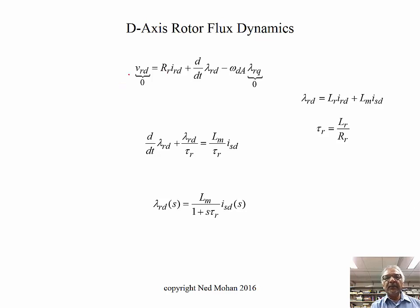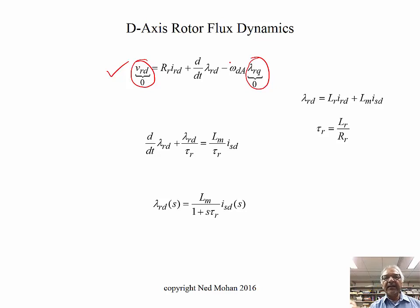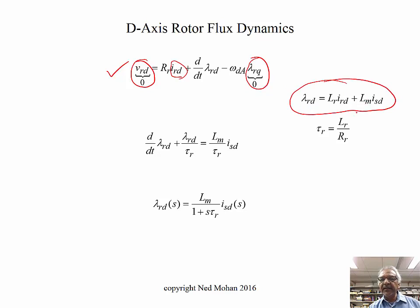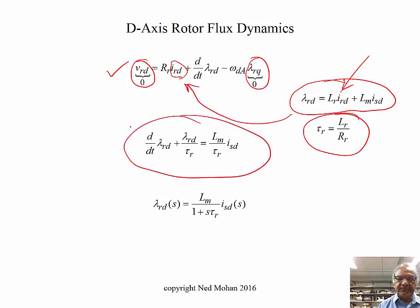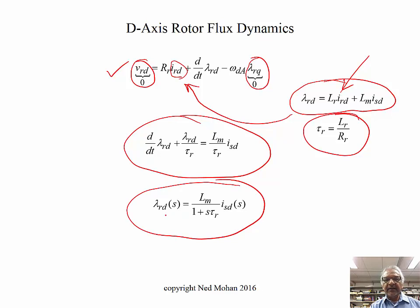Looking at the voltage equation for the rotor D-axis: for a squirrel cage machine VRD is zero, and lambda RQ is zero because the D-axis is aligned with the rotor flux linkage. We have IRD, which we replace in terms of lambda RD using the rotor inductance equation and the rotor time constant. Substituting and expressing in Laplace transform form, lambda RD is a function of ISD with a first-order transfer function.